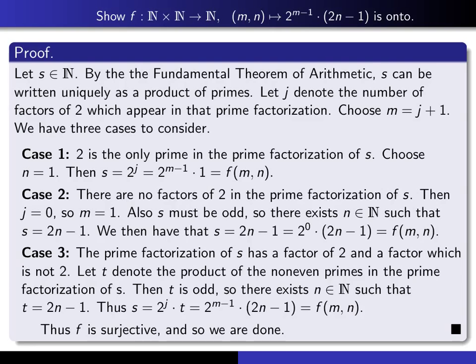So we've shown that given any s in our codomain, we're able to prove that there exists an m and an n in the domain such that f(m,n) is equal to that s and therefore f is surjective and that completes the proof.